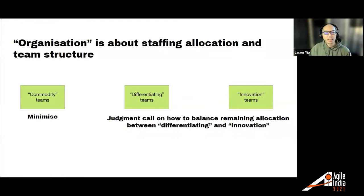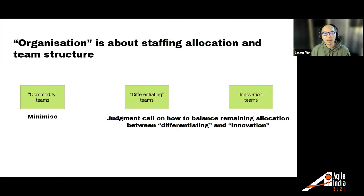And finally, Organization is about staffing allocation and team structure. The idea about staffing allocation is that for product capabilities that are commodity — where you're no longer getting business value out of them, they're no longer experimental, and you're just trying to reduce costs — you don't really want most of your effort there. You want to minimize how much effort you allocate to this as much as possible.